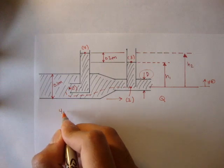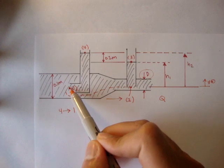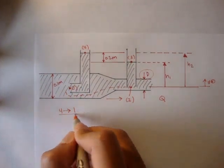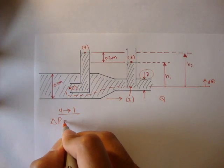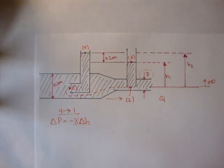So maybe we can take from point four to point one, from here to here. Let's find the pressure at one. We can do that using our delta p is equal to negative gamma delta h. We've been doing that for a while now.